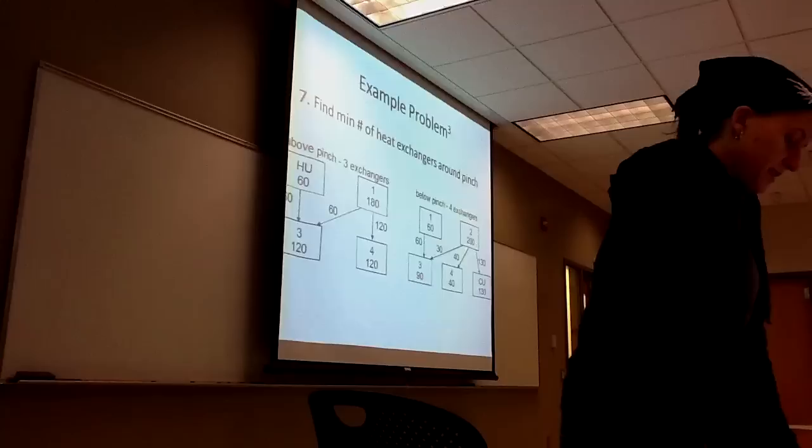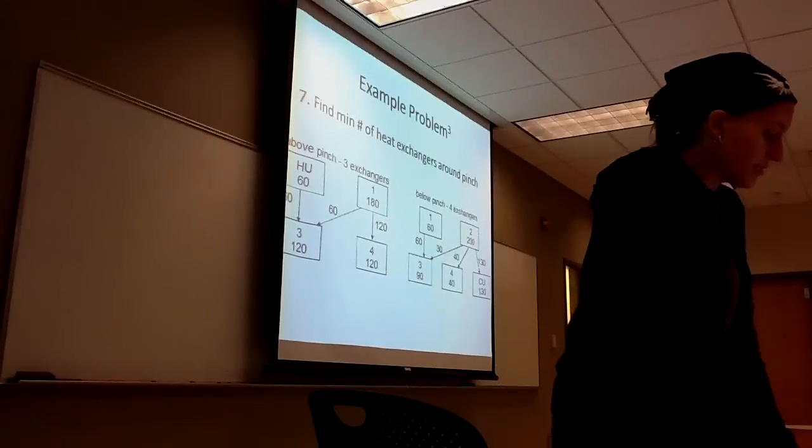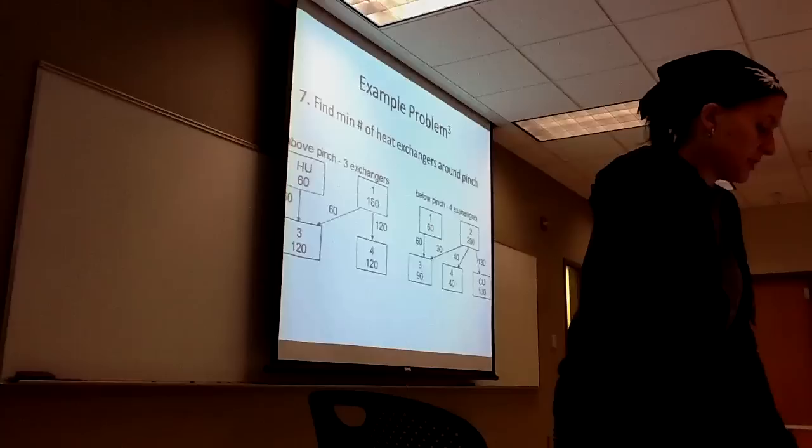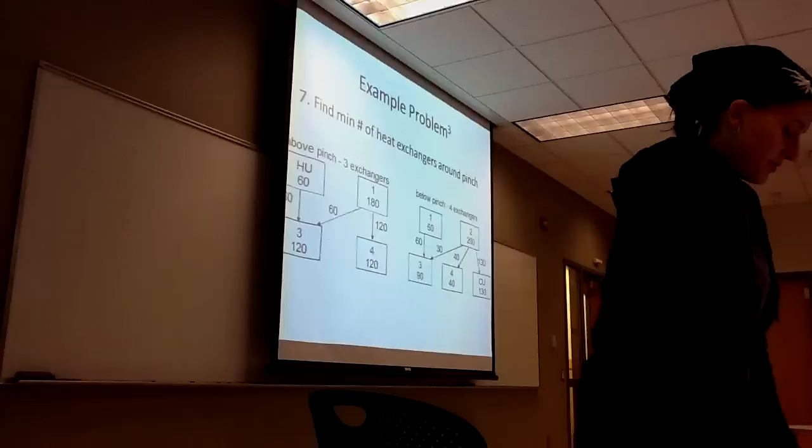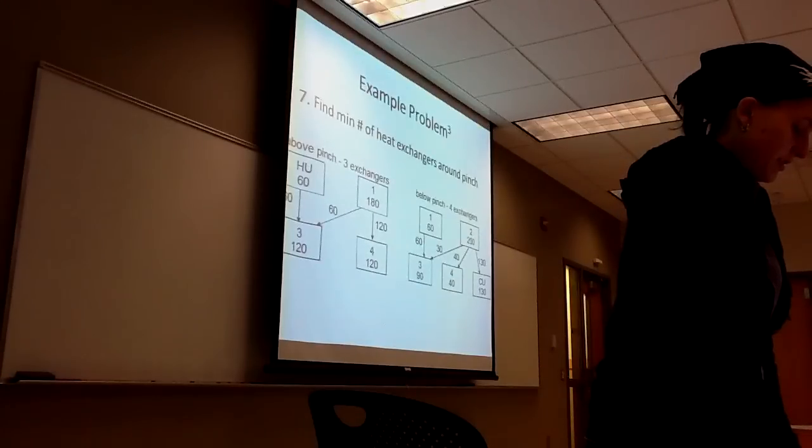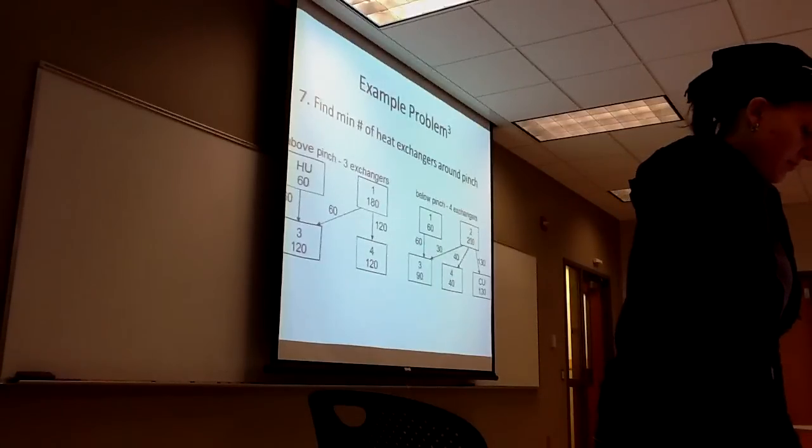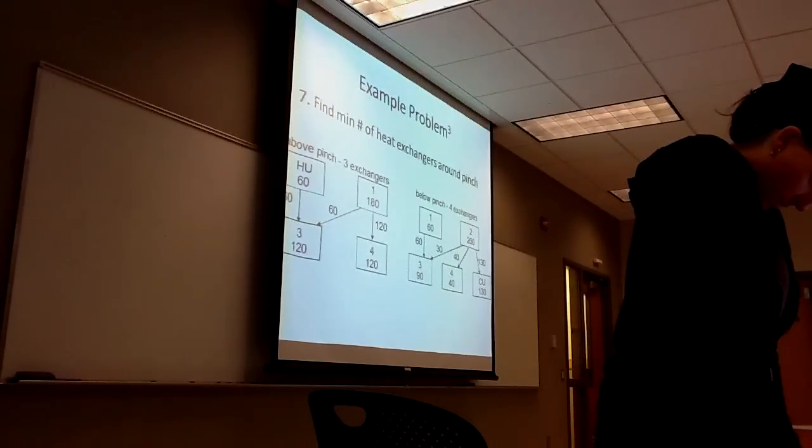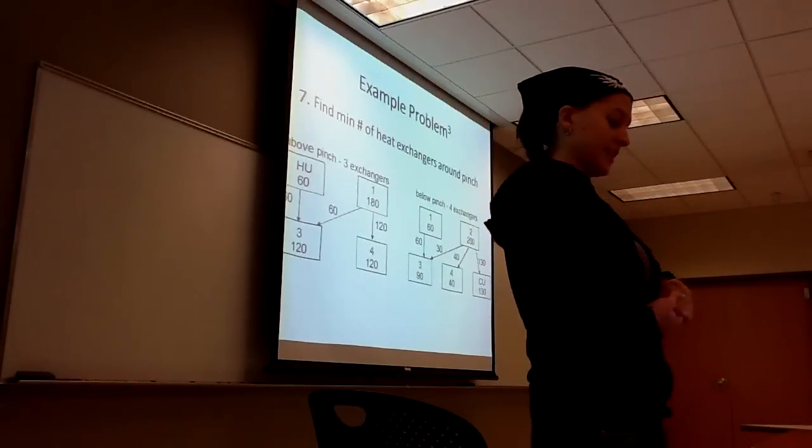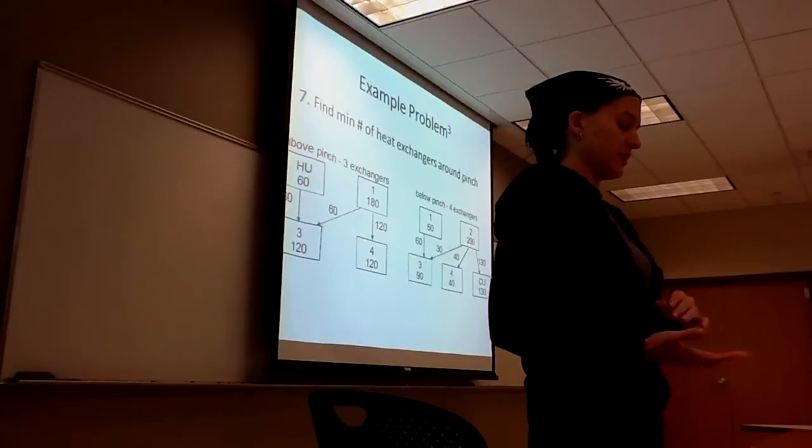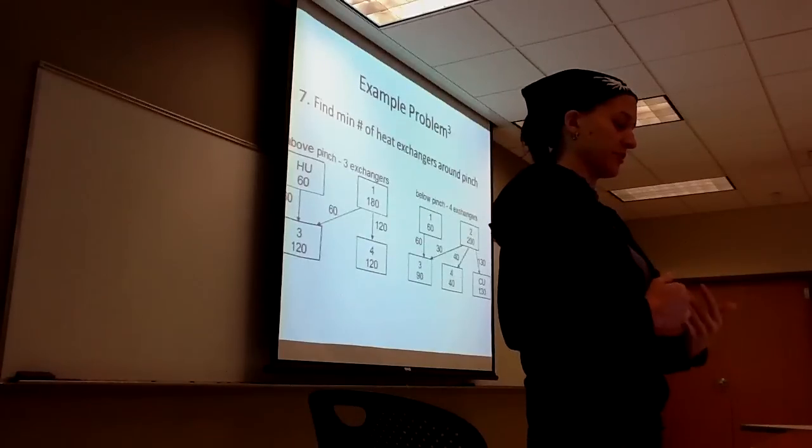This is representing the heat available in each stream, and available from the utilities above and below the pinch. The minimum number of heat exchangers is determined. The correct number of heat exchangers is the number of process streams plus the number of utility streams minus one.